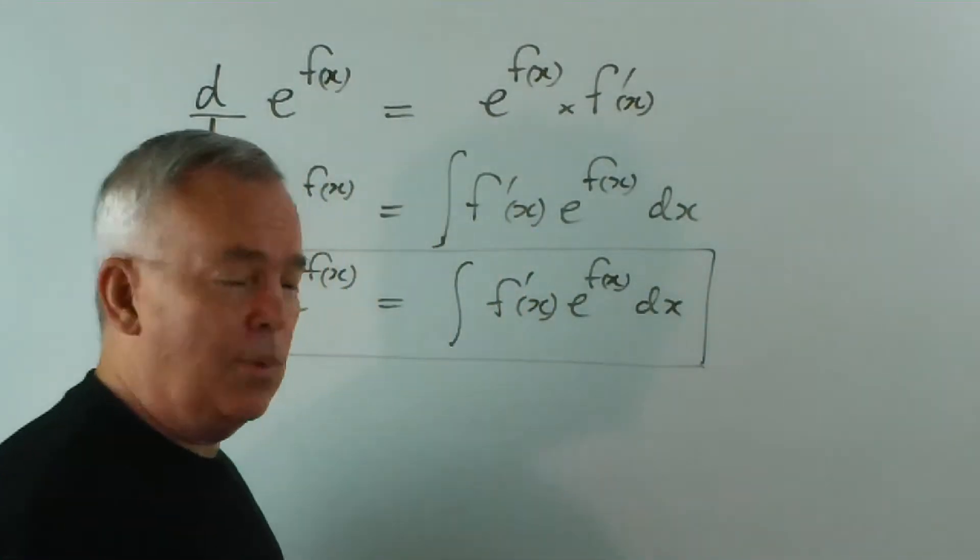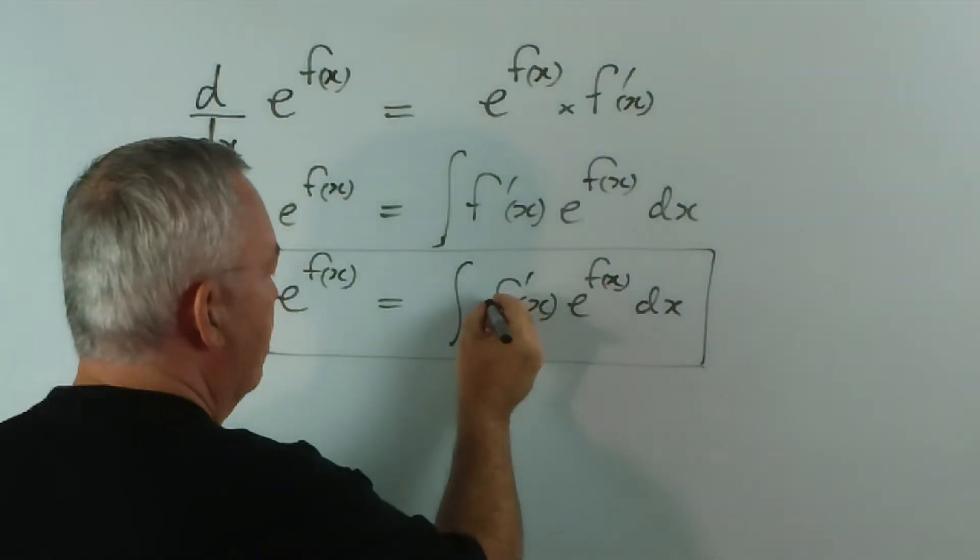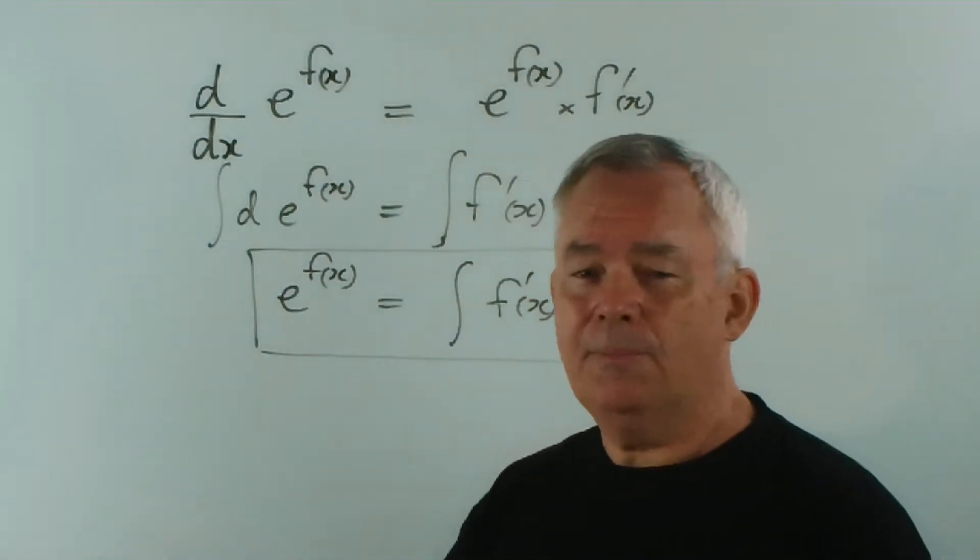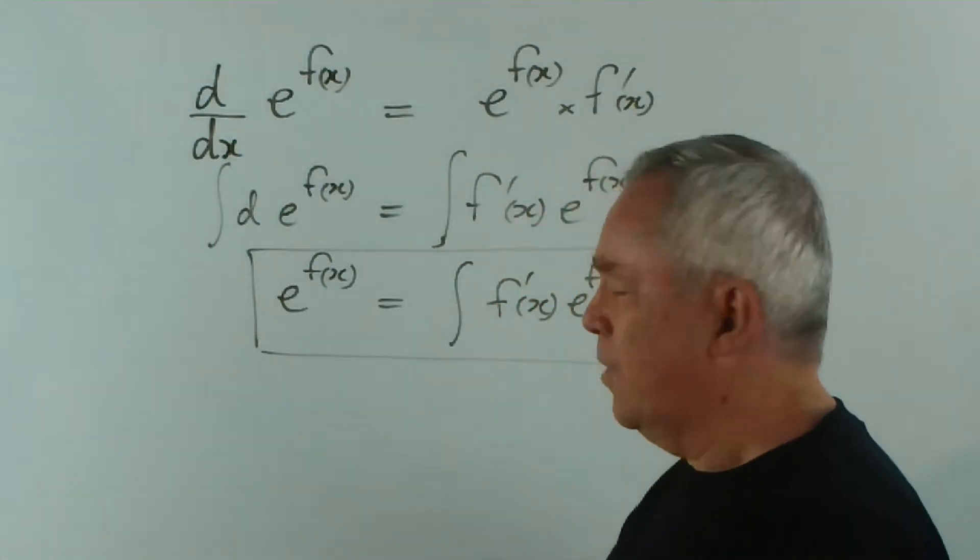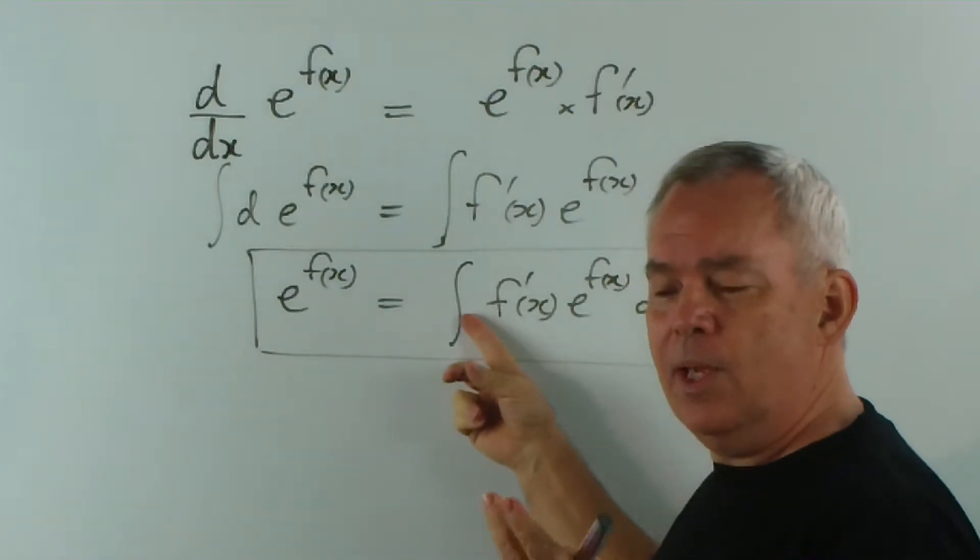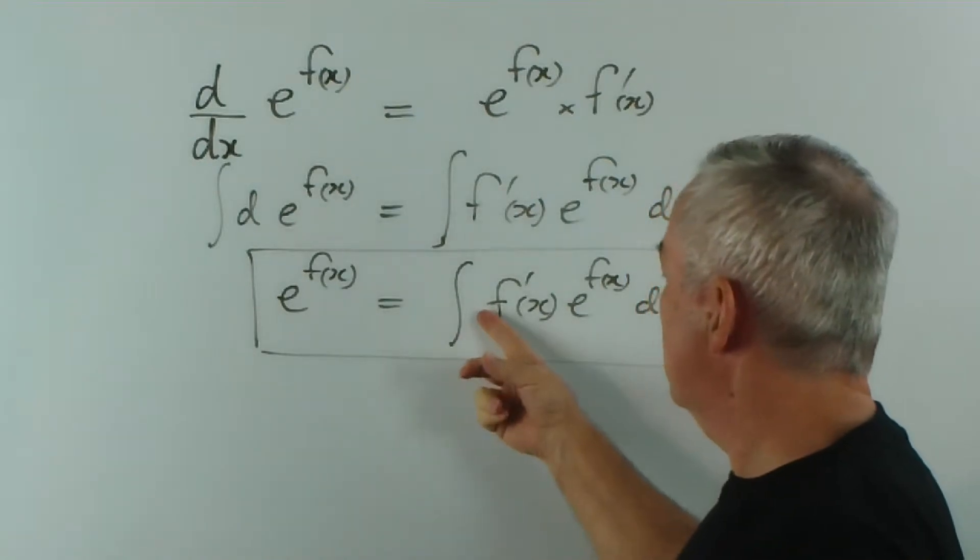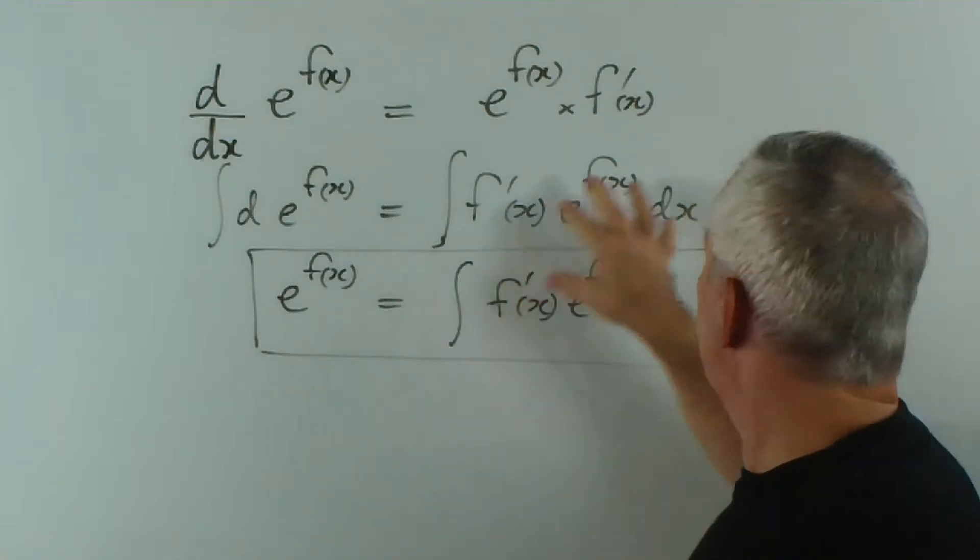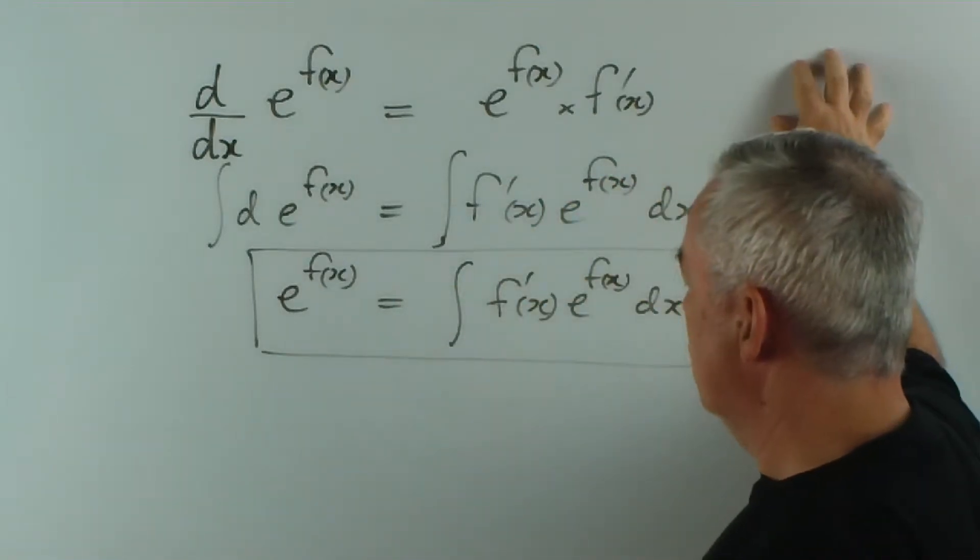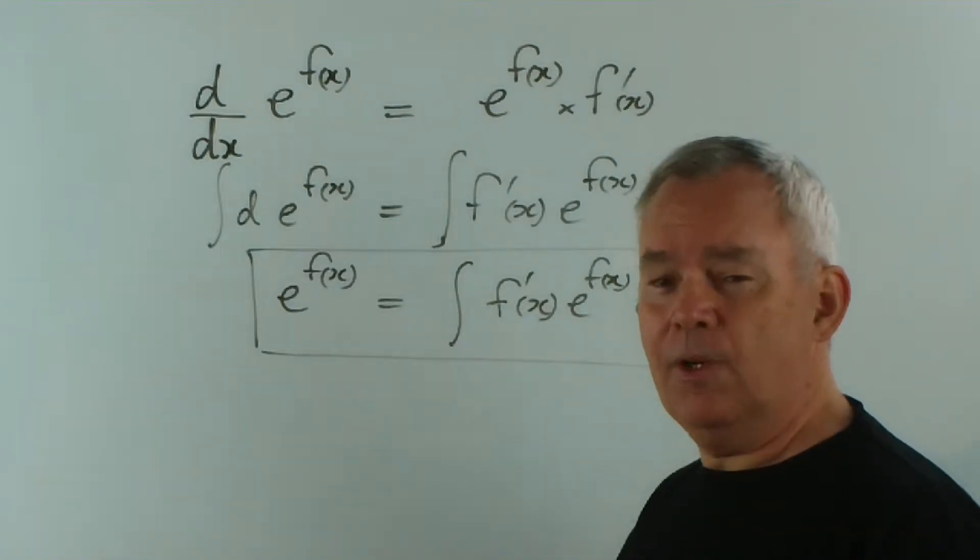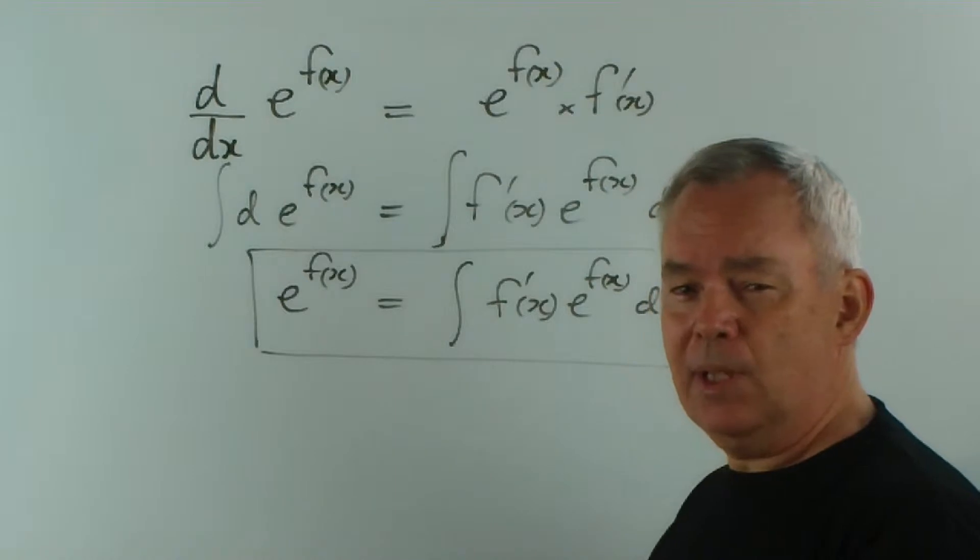Now, you'll notice with this one there's no constant mentioned here, unlike if you've looked at my other two videos on functions to a power, we had constants appear and that meant that we had two options about how we perform the integral. Here there's no constant, this is it, so there's just the one method involved. I'm going to write this up here as a brief summary so we can refer to it, and then we're going to integrate a couple of functions to demonstrate how this takes place.